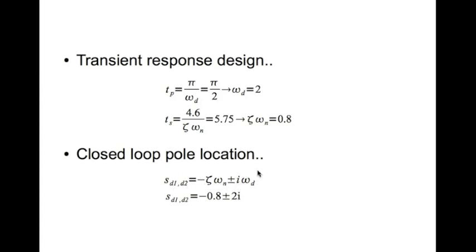The actual system is not a second order system — it is a third order system — but we are designing for the dominant second order closed loop pole pair, which is why we can use this approximation. So the desired poles s_d1,d2 are minus 0.8 plus or minus 2i.